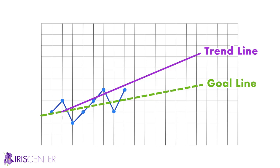The goal line is the straight, dotted line representing a student's expected rate of improvement needed to meet a predetermined goal. It may be denoted by a capital G. The trendline is the straight, solid line representing the general direction of the student's scores. It may be denoted by a capital T.